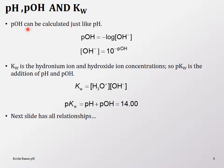Now let's talk about pOH. pH is the negative log of hydronium ion. You can also calculate pOH, which is the negative log of the hydroxide ion concentration. The pH and pOH run opposite to each other: if pH is small it's a strong acid; if pOH is small it's a strong base. They are calculated the same way but go in opposite directions.